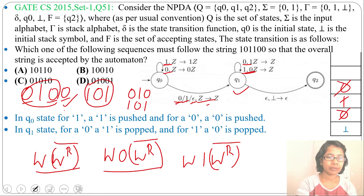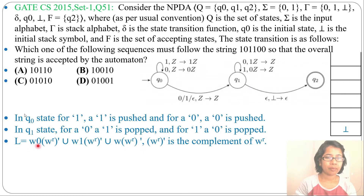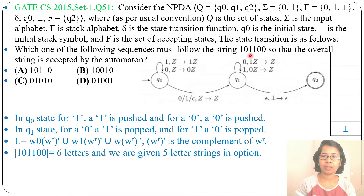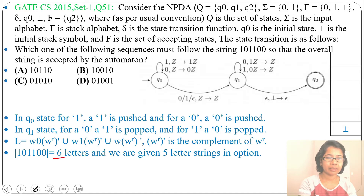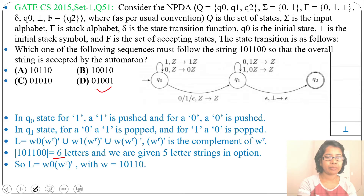The language L is the union of these three cases: L = W·0·W-reverse-complement ∪ W·1·W-reverse-complement ∪ W·W-reverse-complement, where W-reverse-complement is the complement of W-reverse. The given string is 1, 0, 1, 1, 0, 0, which has length 6. But all options have length 5, so the applicable language form is W·0·W-reverse-complement.